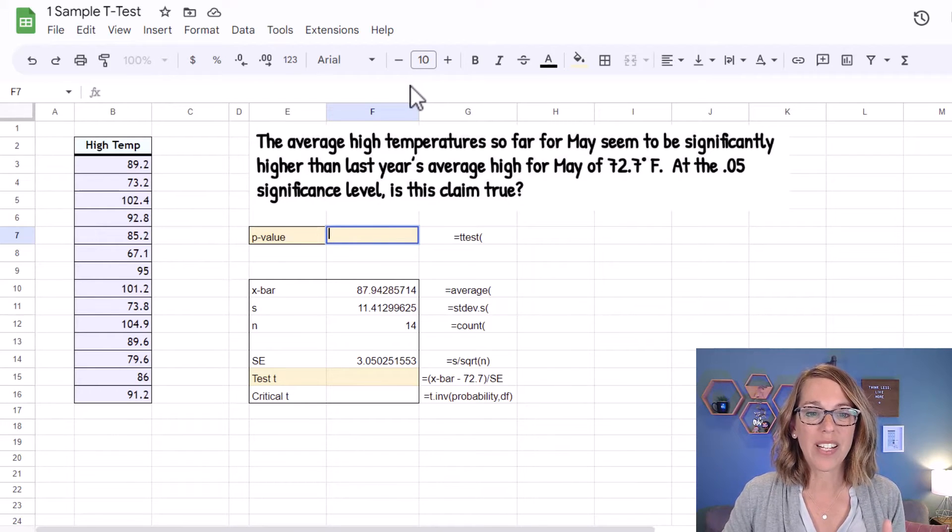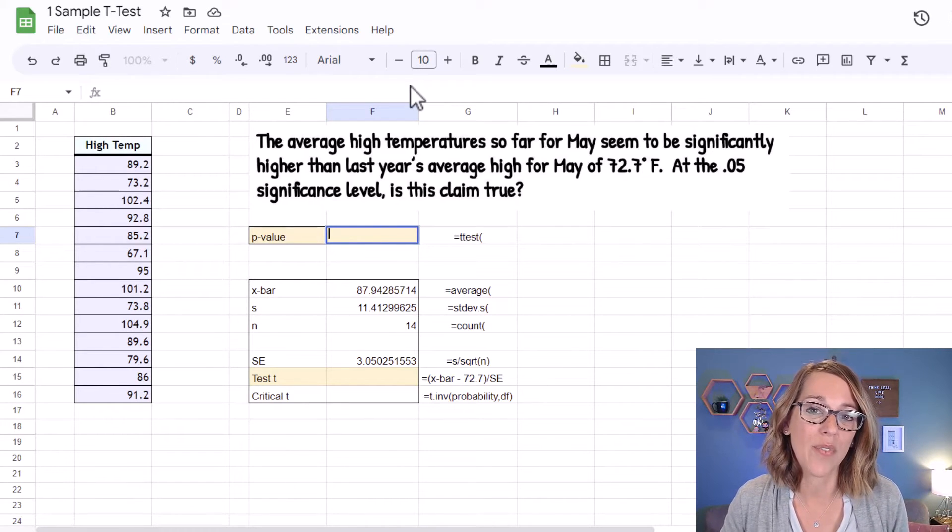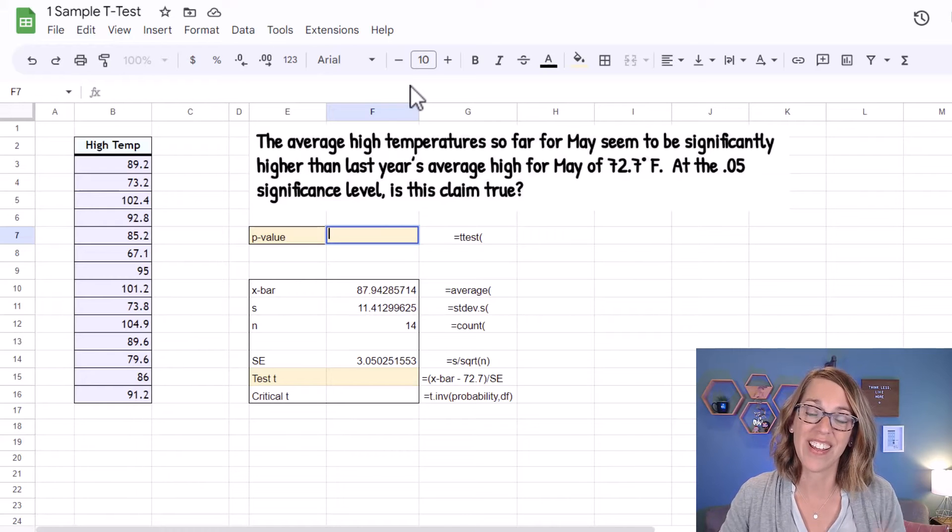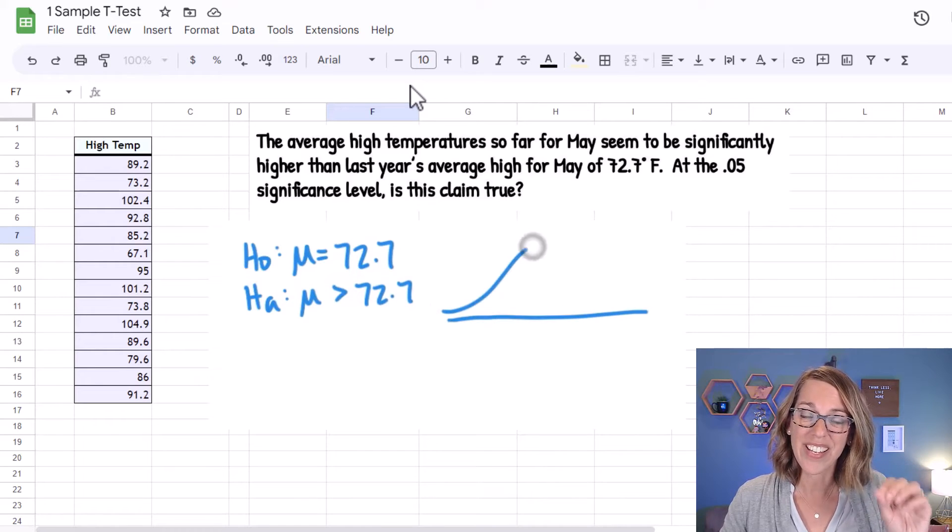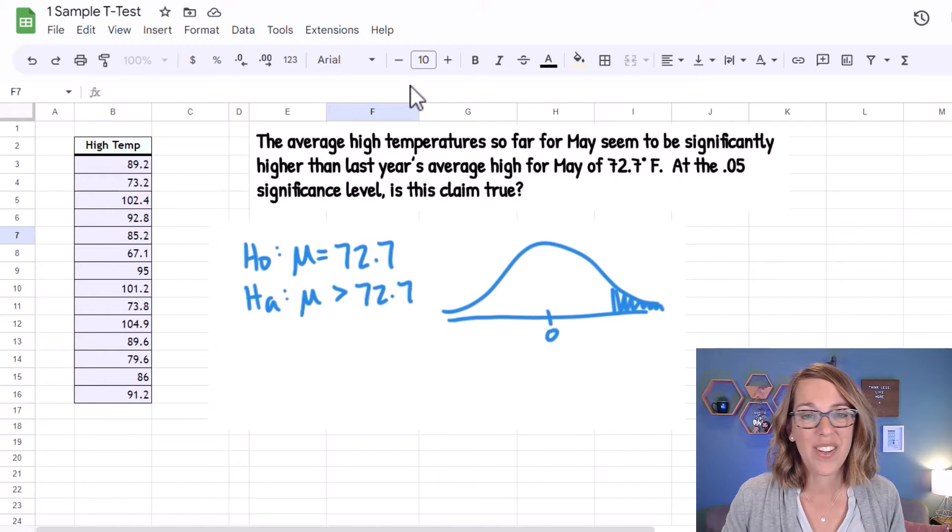Now for this particular example, we're claiming that the average high for May so far is greater than the average for last year. This gives me my two hypotheses, including a one tail on the right hand side. We also do not have a population standard deviation, so we're going to be conducting a t-test.